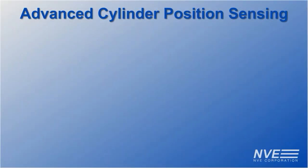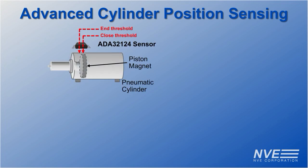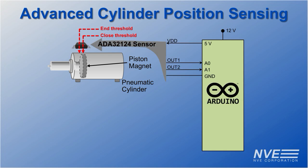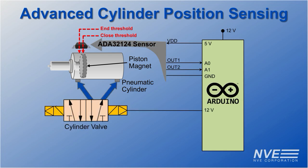Here's the wiring diagram. The sensor detects the position of a magnet on the cylinder piston. The sensor is connected to an Arduino. The cylinder is controlled by a five-way three-position valve.